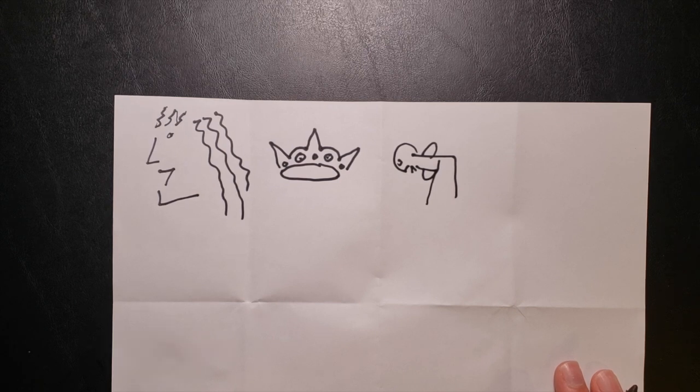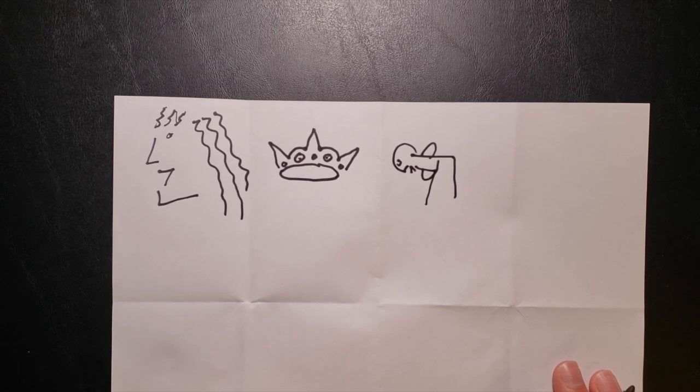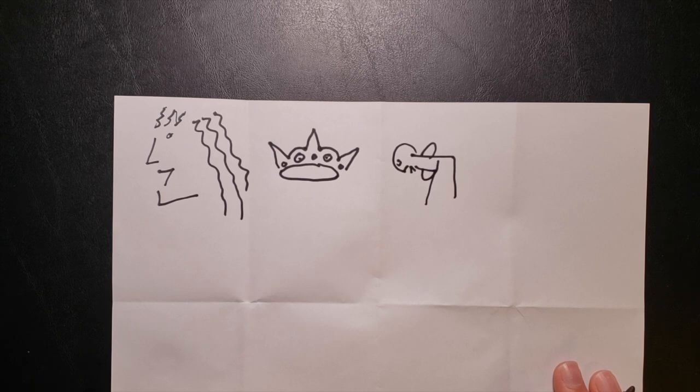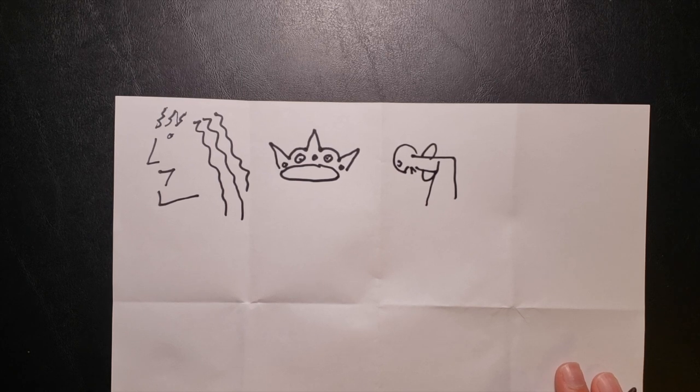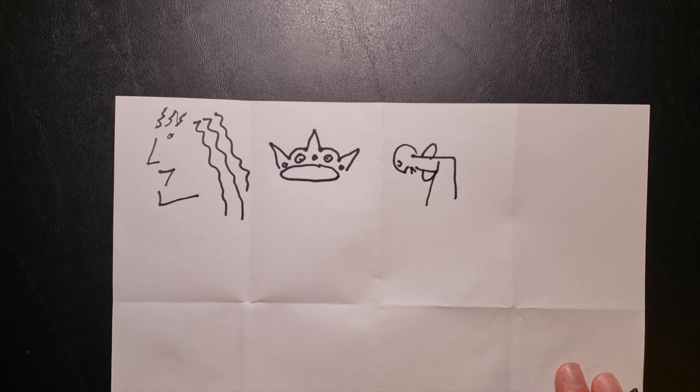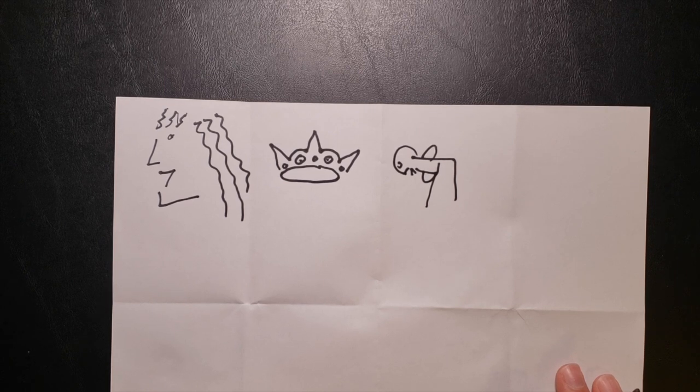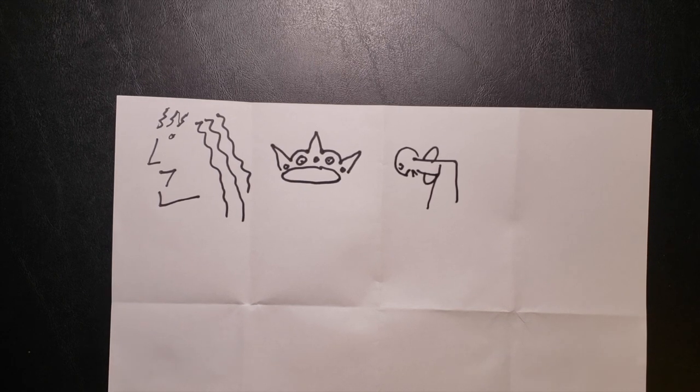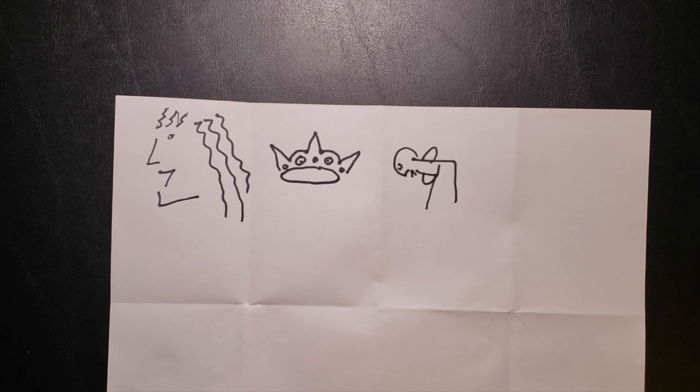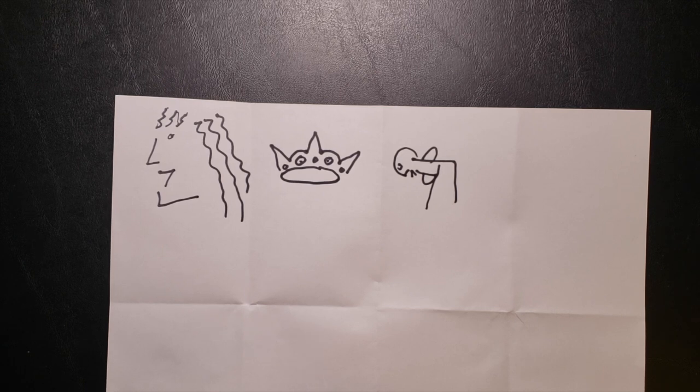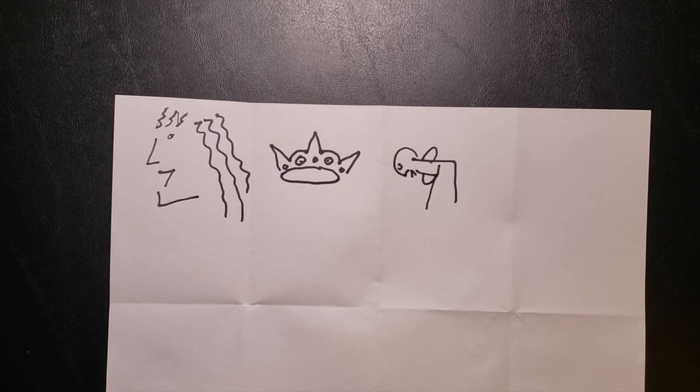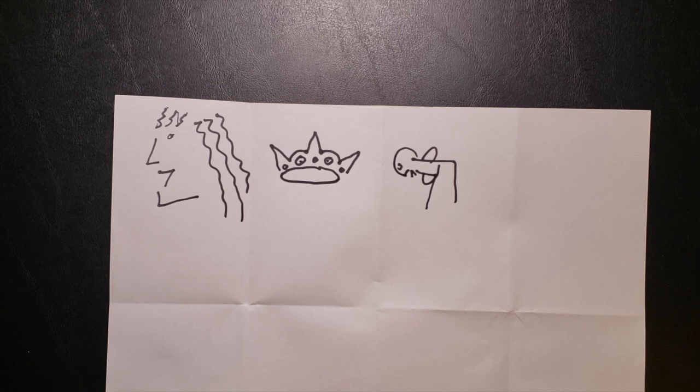So people would bow down before the king of Persia and before this guy named Haman who was also a really important official. And you know what? Everyone would do this. But the time came for Mordecai to bow down and Mordecai did not like Haman very much. So Mordecai would not bow down before him. And you know what? This made Haman really, really angry and he hated Mordecai and all of the Jews. Haman told the king how much trouble all the Jews were because Mordecai was a Jew.